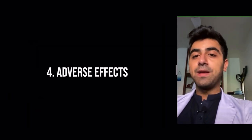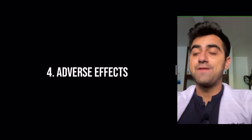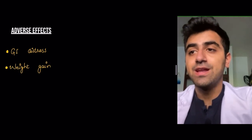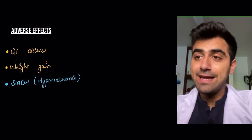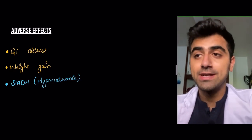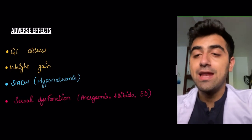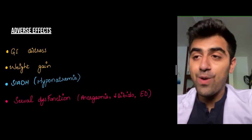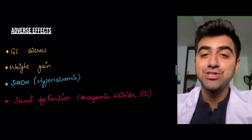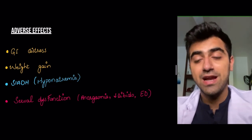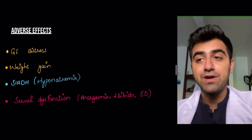Adverse effects of SSRIs include GI distress, weight gain, SIADH causing hyponatremia, and sexual dysfunction — which includes anorgasmia, decreased libido, and erectile dysfunction. Sexual dysfunction is precisely why SSRIs are prescribed for premature ejaculation disorder, and it is a very common and potentially worrisome adverse effect for patients.